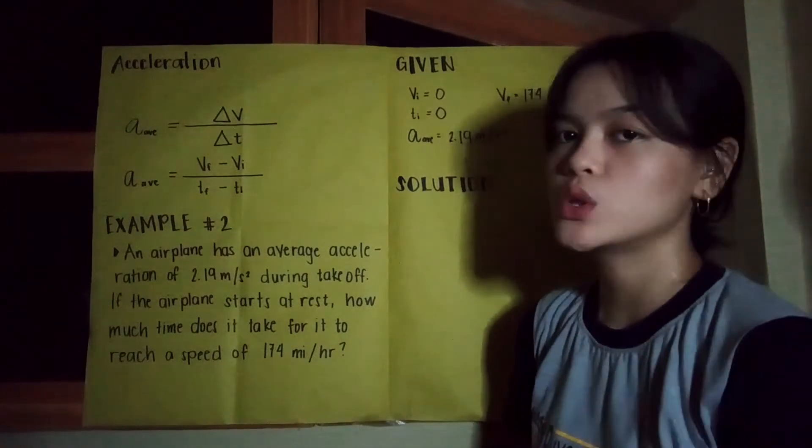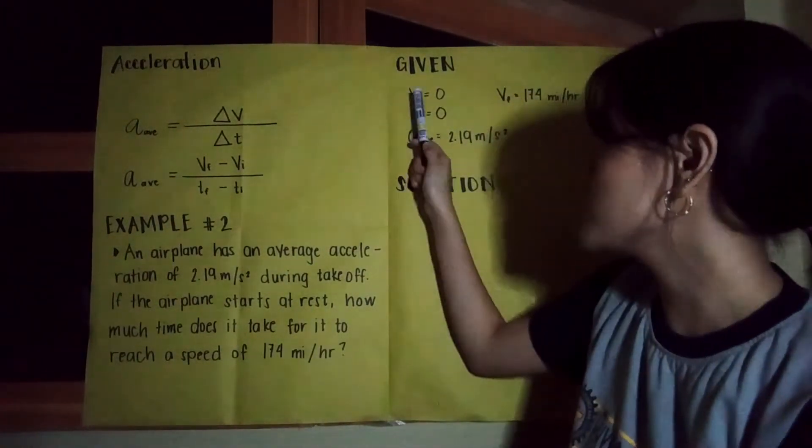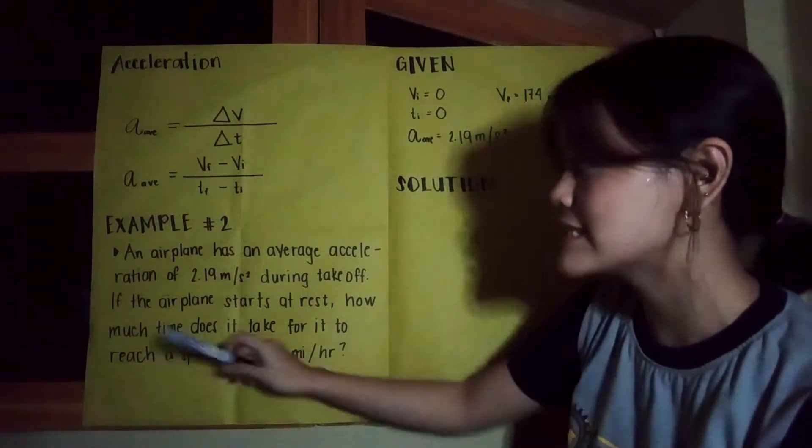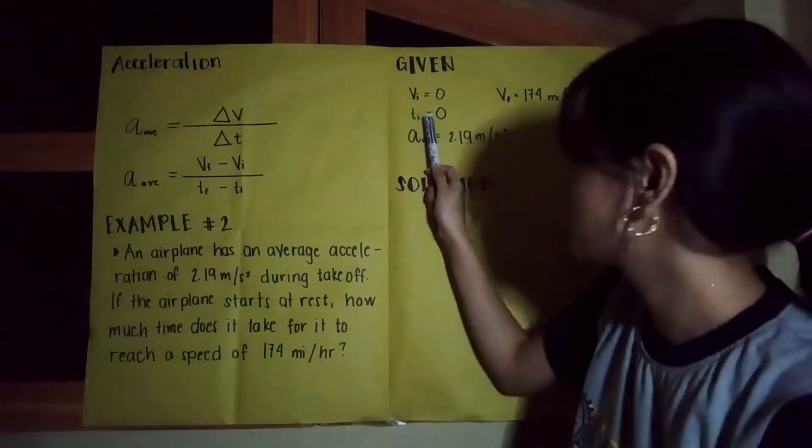The first thing we need to do is identify our given values. In this sample problem, our initial velocity is equivalent to zero because it says the airplane starts at rest. And our initial time is also equivalent to zero.